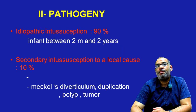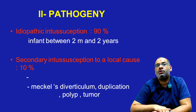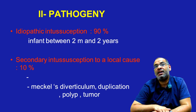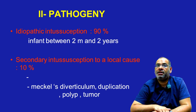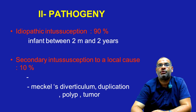For the pathogeny, we distinguish two forms of acute intussusception. First of all, idiopathic intussusception, which is seen in 90% of cases, seen in infants between two months and two years. And also we have secondary intussusception due to a local cause that can be Meckel's diverticulum, duplication, polyp, or tumors.